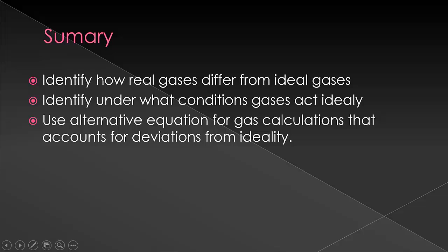So, now we've talked about how ideal gases and real gases actually differ from each other and under what conditions that gases are not going to act ideally and maybe the ideal gas law isn't the best situation to use. We also learned an alternative equation for gas calculations that we can use in situations like this that account for deviations from ideality by using experimentally determined constants.